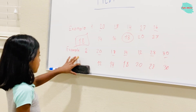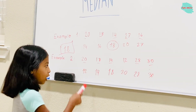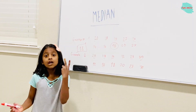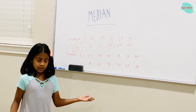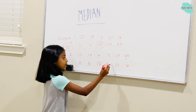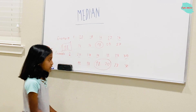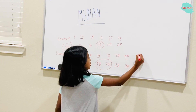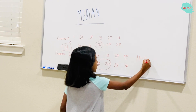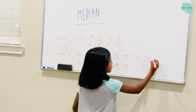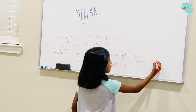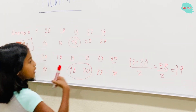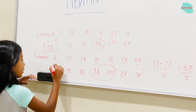Now to find the median, you have to count how many numbers there are: 1, 2, 3, 4, 5, 6. As you see, there's an even number, so that means there are going to be two medians — two numbers that are going to be circled, which are 18 and 20. The problem is not done yet. The second step is 18 plus 20, which gives you 38, divided by 2, equals 19. So the answer for the second problem is 19.